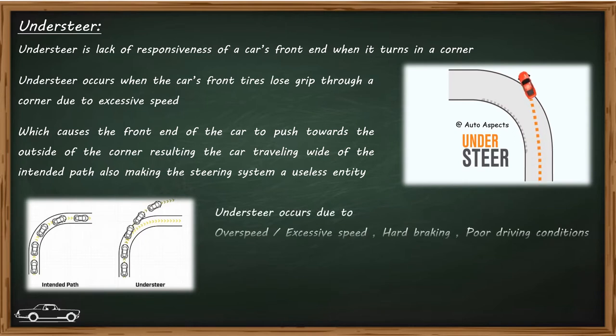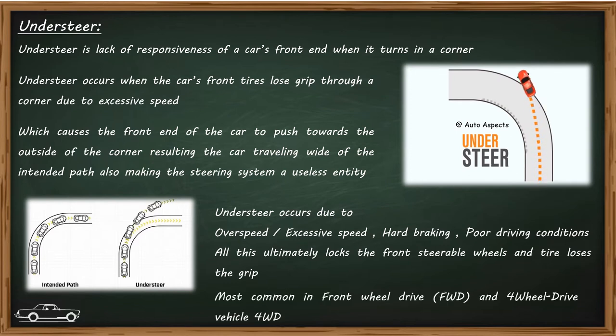Understeer generally occurs during following conditions: excessive speed while cornering, hard braking, and sometimes poor driving conditions are also a major cause.